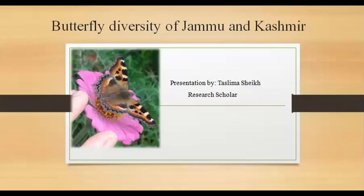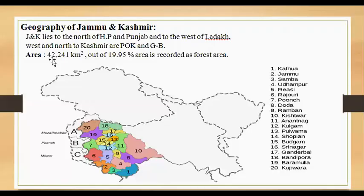Good evening Sharon and good evening to all of you. Let's start with the butterfly diversity of Jammu and Kashmir. Jammu and Kashmir lies to the north of Himachal Pradesh and Punjab, and to the west of Ladakh. In 2019, Ladakh Union Territory was separated from Jammu and Kashmir. The area administered under India is around 42,241 square kilometres, of which 19.95% is recorded as forest area. In this map, the Kashmir and Jammu part is shown, with the white part representing Ladakh.